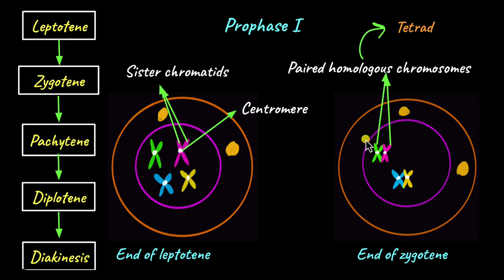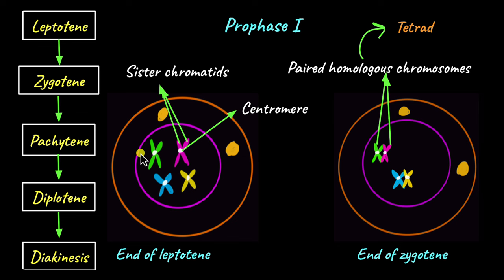Tetrad formation is important because of something that happens in the pachytene stage: chromosomal crossing over, or chromosomal recombination. While we have sister chromatids — which is the same chromosome that has been replicated — there is also something called non-sister chromatids. The other two chromatids in a homologous pair of chromosomes are non-sister chromatids. So if the two green chromatids are sister chromatids, then one green and one pink are non-sister chromatids but still belong to the same homologous pair, and it is between these non-sister chromatids that crossing over or recombination takes place.